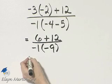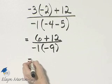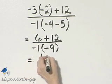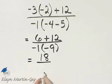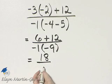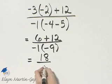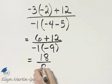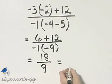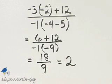Now let's continue to simplify. In the numerator, 6 plus 12 is 18. In the denominator, I have negative 1 times negative 9. A negative times a negative is positive, and 1 times 9 is 9. And then what is 18 divided by 9? It is 2.